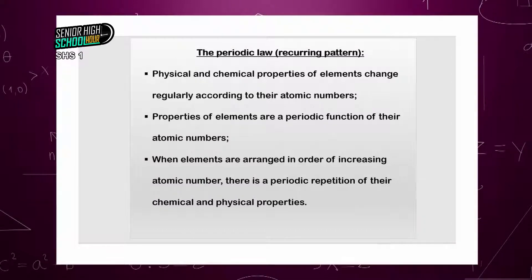And the elements have their physical properties, and they can combine. They can undergo chemical changes when you put them together — then we say that is a chemical reaction. So, per definition of the periodic law, it is the physical and chemical properties of elements changing regularly according to their atomic numbers.